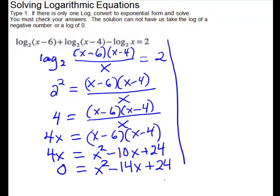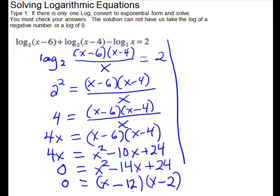We factor this quadratic. Both signs are negative — sorry, like signs, both minus. We're multiplying to get 24 and combining to get 14. So 12 and 2 is our choice. Since they are like signs, they are both subtracted: (x minus 12)(x minus 2). This gives us x equals 12 and x equals 2.